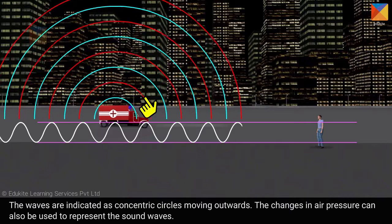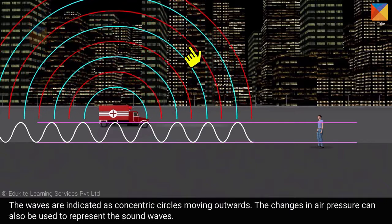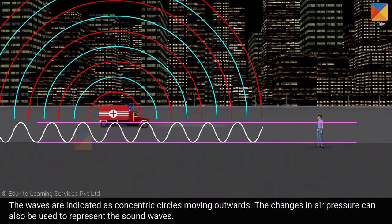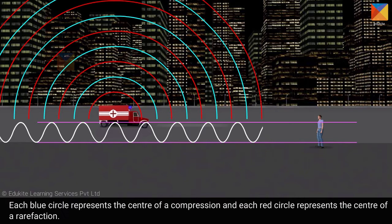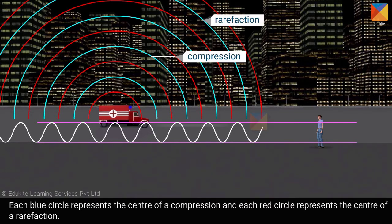The waves are indicated as concentric circles moving outwards. The changes in air pressure can also be used to represent the sound waves. Each blue circle represents the centre of a compression, and each red circle represents the centre of a rarefaction.